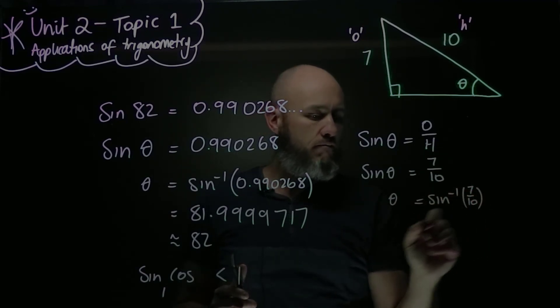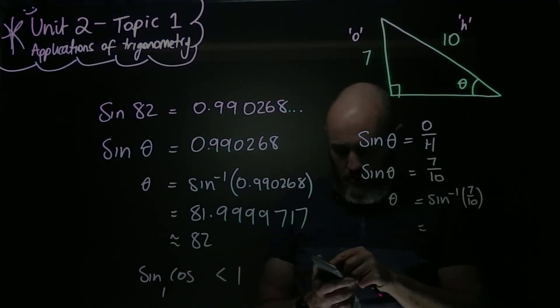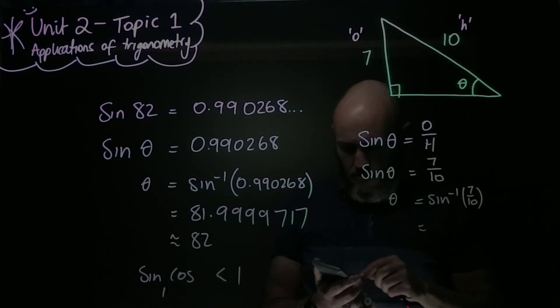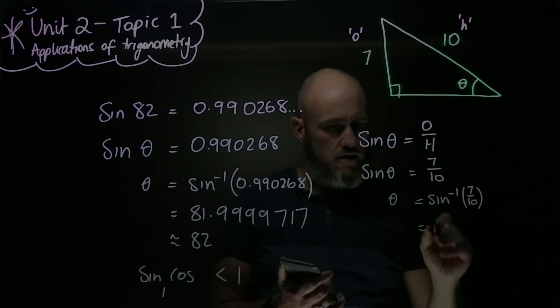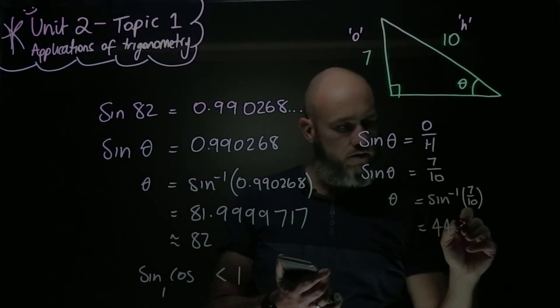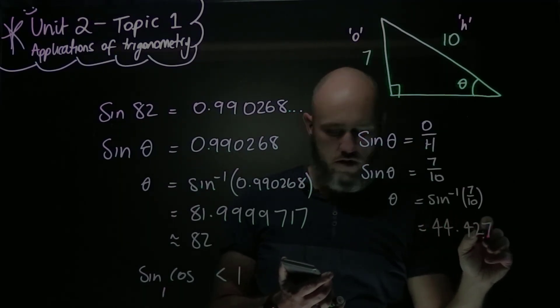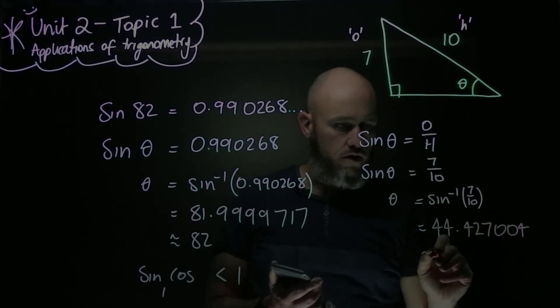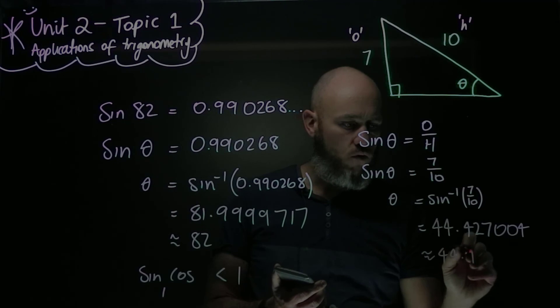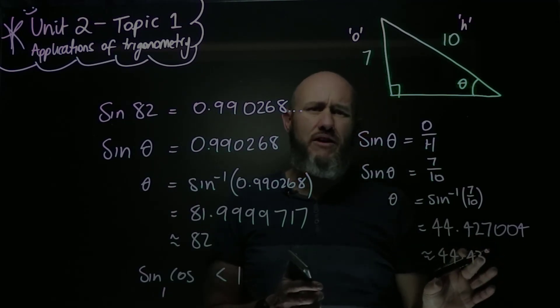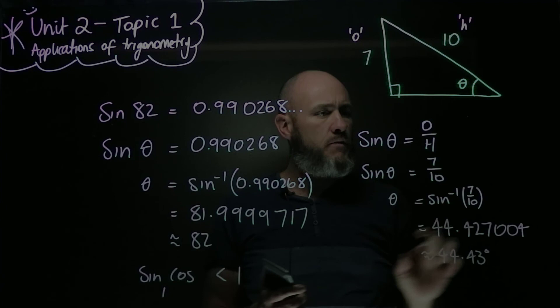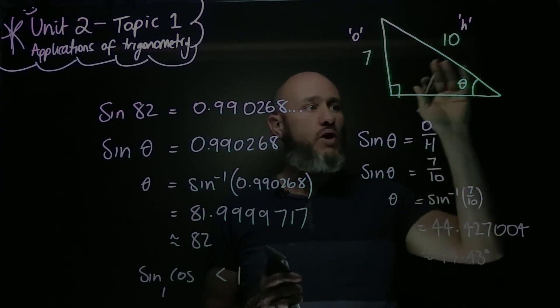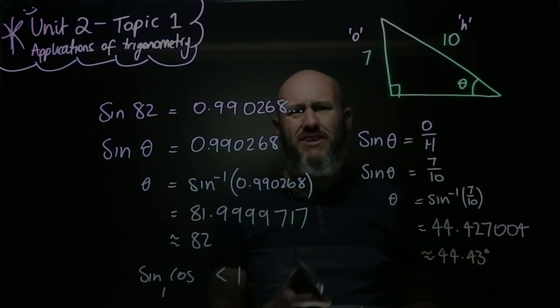And I'll just do that now. I'll do shift sine, I'll do the fraction bit. 7 over 10, close brackets. And I'll get 44.427004, which is 44.43 degrees to two decimal places, as we're expecting. So there's your answer to finding that angle using inverse trig.